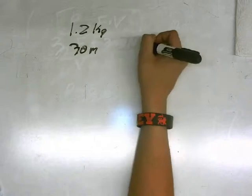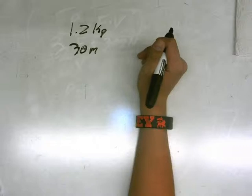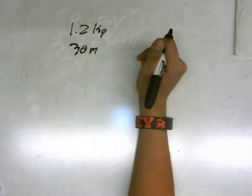Part A: Calculate the work done by gravity on the cantaloupe during its displacement from the roof to the ground. And Part B: What is the kinetic energy of the cantaloupe just before it strikes the ground?